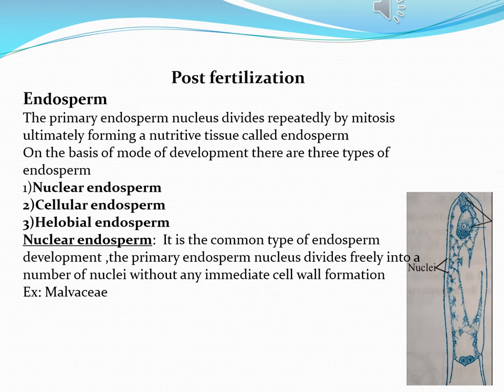On the basis of mode of development, there are three types of endosperm: the first is nuclear endosperm, the second is cellular endosperm, and the third is helobial endosperm. Let's first focus on nuclear endosperm.